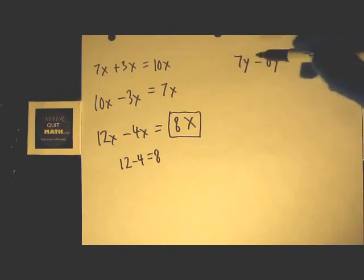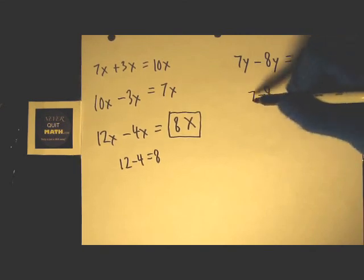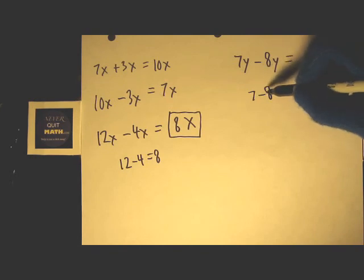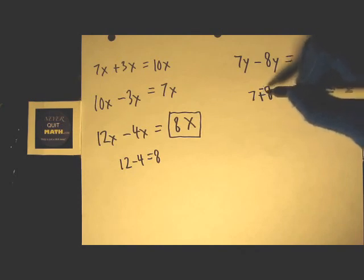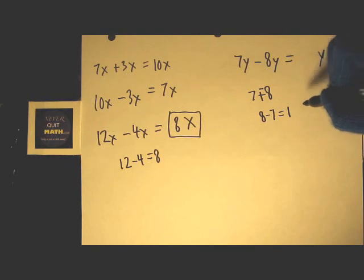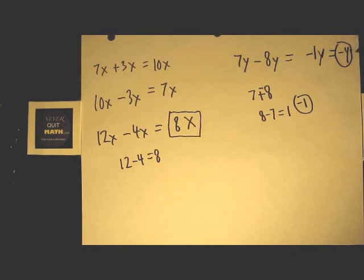You do seven minus eight. Turn this into addition, turn this into a negative sign. Seven plus negative eight equals what? Eight minus seven, which equals one, and that is negative one. So I got negative 1y, which is the same thing as negative y.